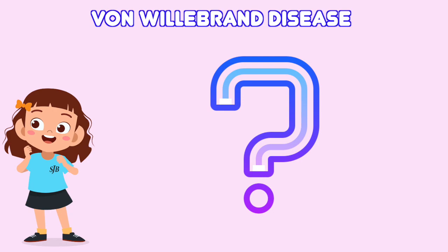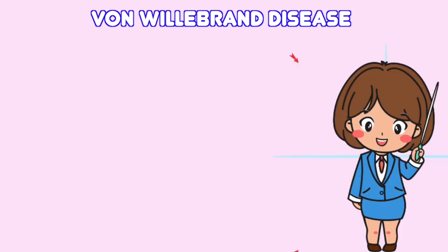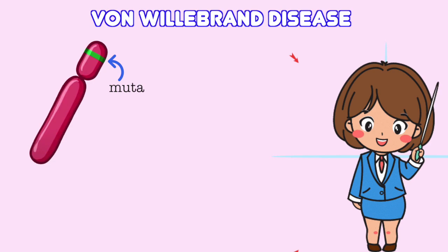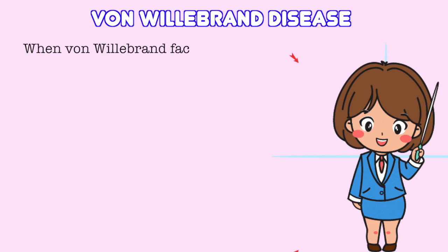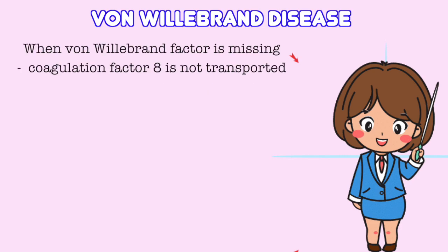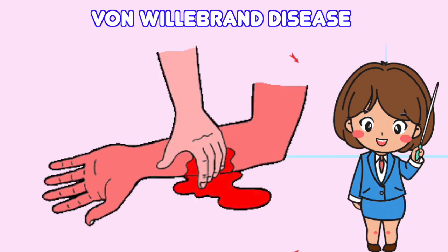However, I don't know what mechanisms lead to this disease. Well, it's very easy. A mutation of the gene coding for von Willebrand's protein causes the disease. When von Willebrand's factor is missing, coagulation factor VIII is not transported and therefore platelets don't adhere, causing mucocutaneous hemorrhages and hematomas.